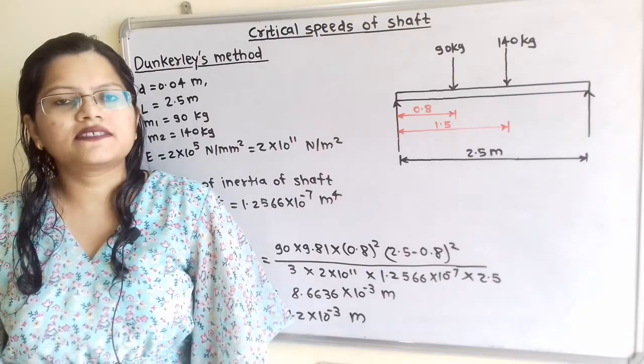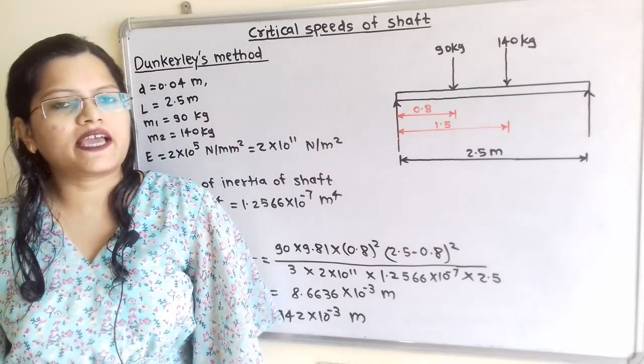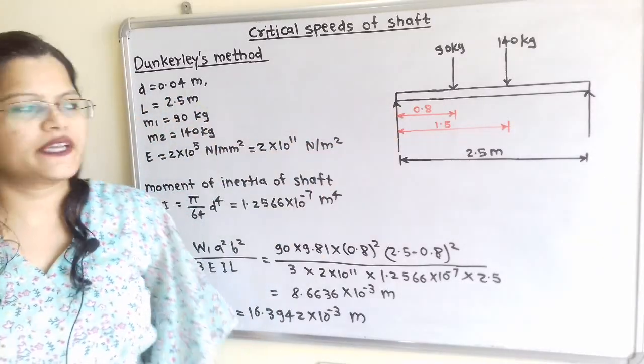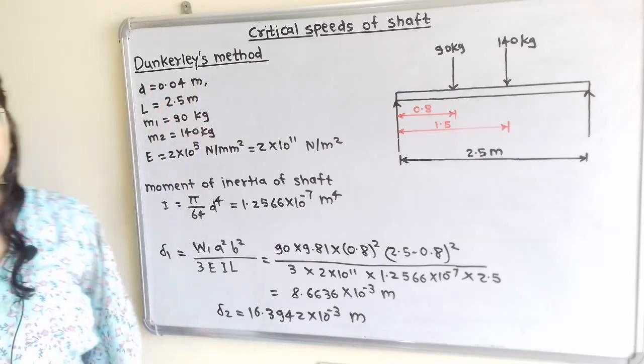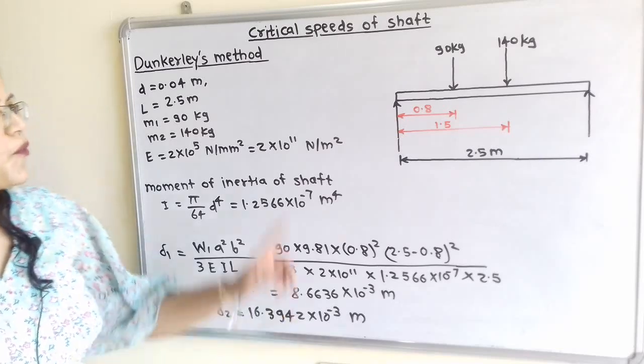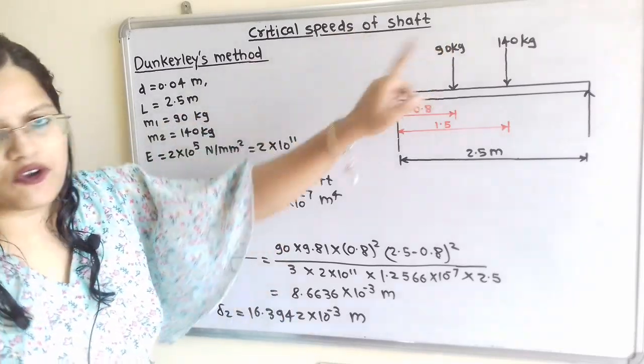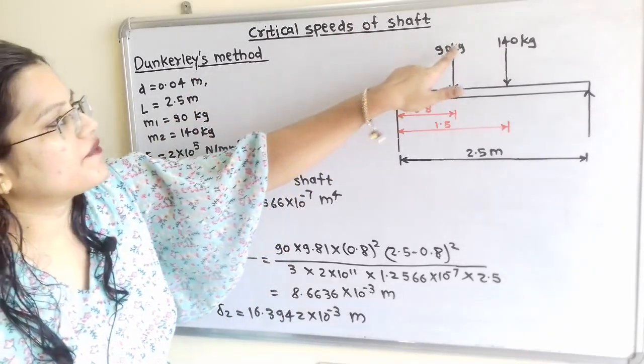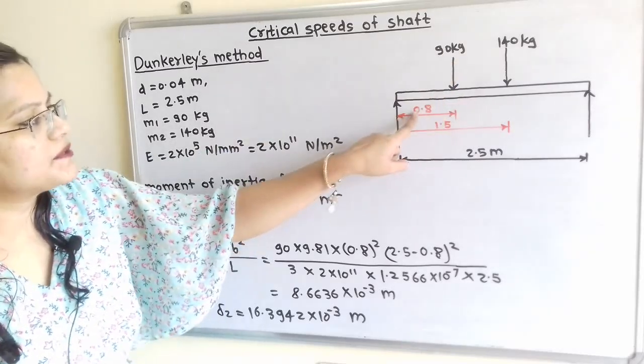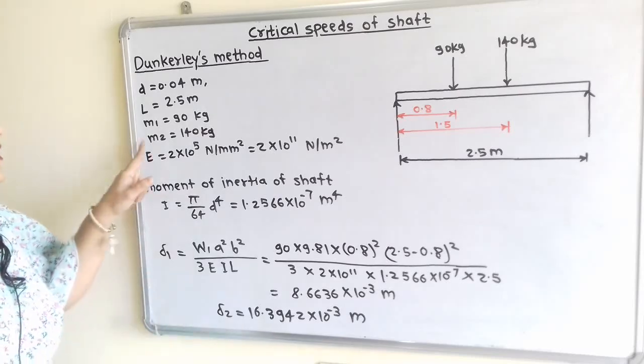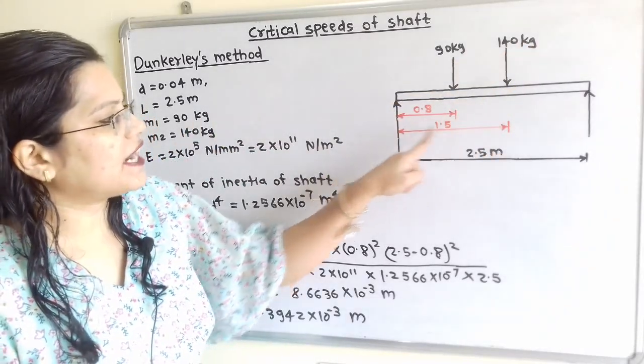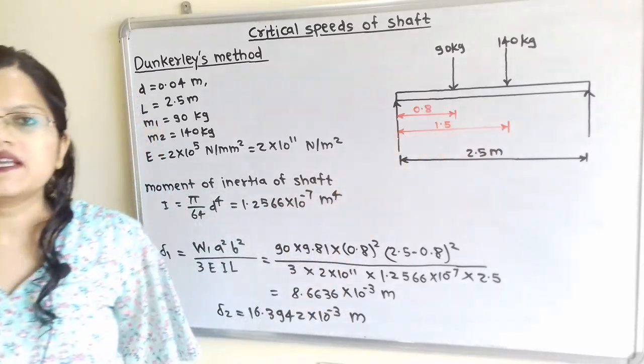Let us understand given data with the help of diagram. Diameter of the shaft is given 0.04 m, length of the shaft 2.5 m. Now the first point load is given 90 kg, so we will say mass M1 is 90 kg and it is placed at a distance of 0.8 m from the left hand side. Then the second point load is 140 kg and it is placed at 1.5 m from the left hand side.